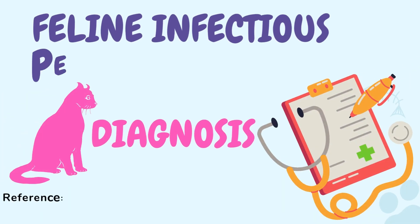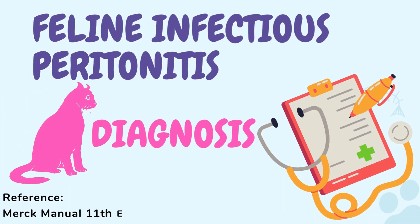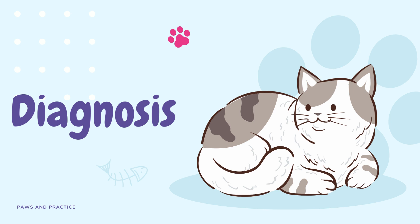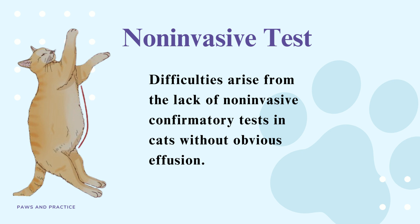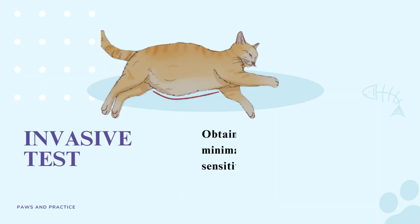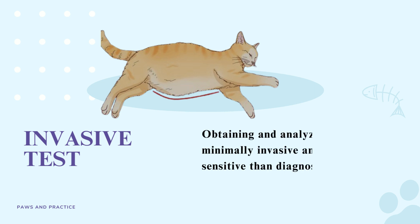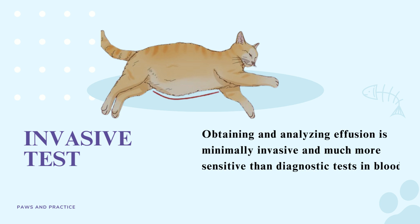Welcome to our YouTube channel Pause and Practice. Today we are going to learn about how to diagnose feline infectious peritonitis. Reliable and rapid diagnosis of FIP is important but can be challenging. Difficulties arise from the lack of non-invasive confirmatory tests in cats without obvious effusion. Obtaining and analyzing effusion is minimally invasive and much more sensitive than diagnostic tests in blood.